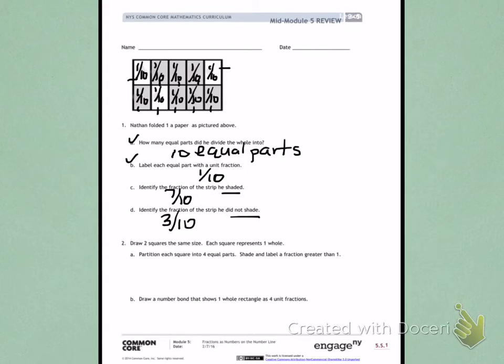Number 2. Draw two squares the same size. Each square represents one whole. So the first thing I need to do is draw two squares that are the same size. It's important to draw them the same size, because we cannot compare fractions that are not the same size.